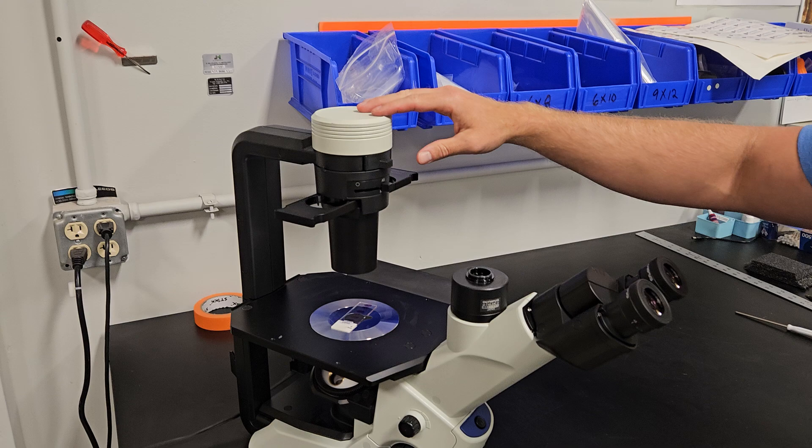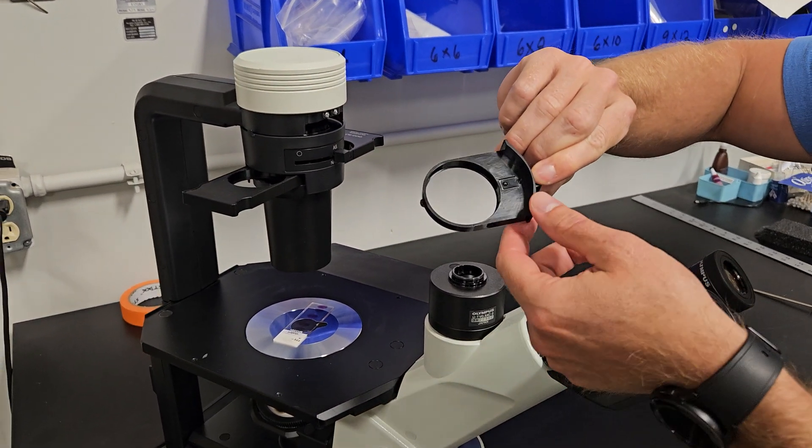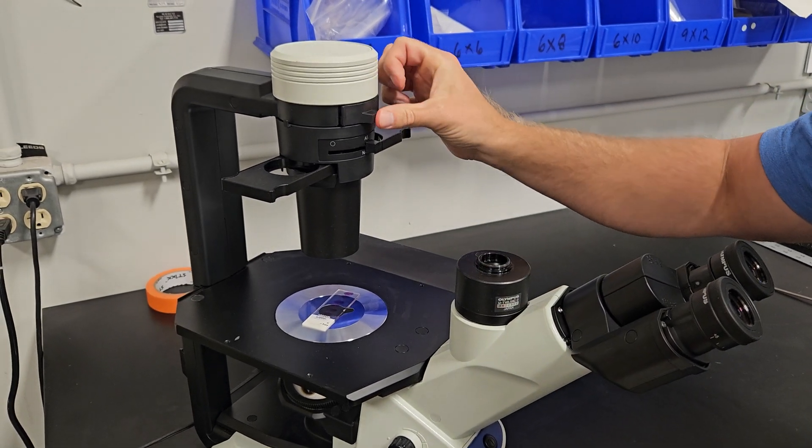We're going to work from the top down. Right here, you have a little filter holder, so you can put a different colored filter in there. A lot of folks when they're doing tissue culture work like a green filter, so you can put a green filter in there.